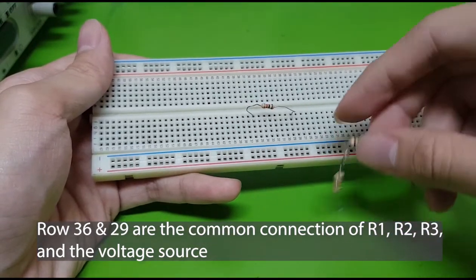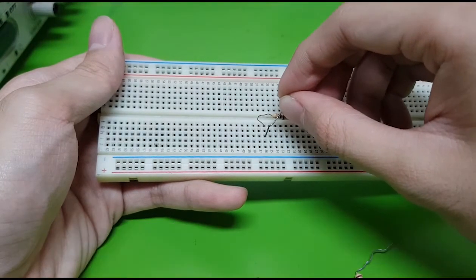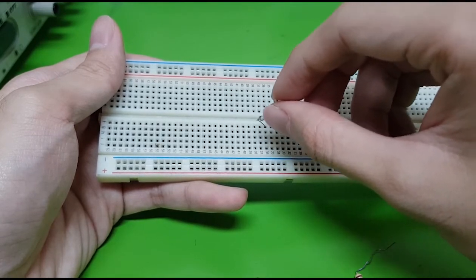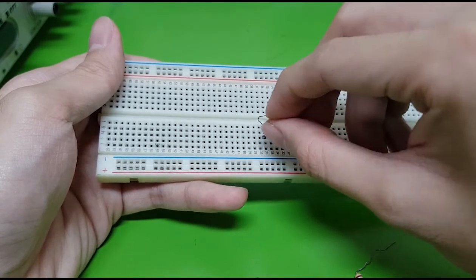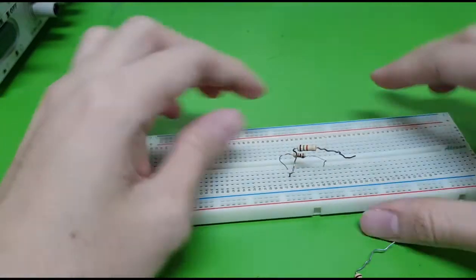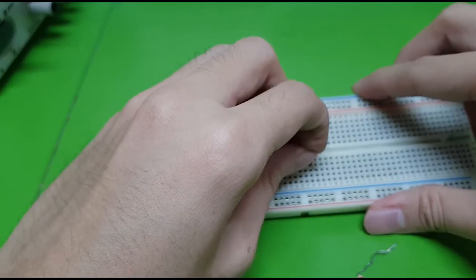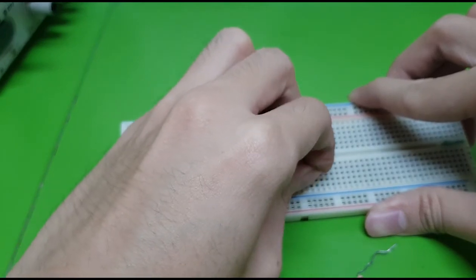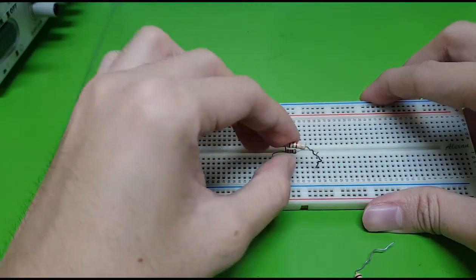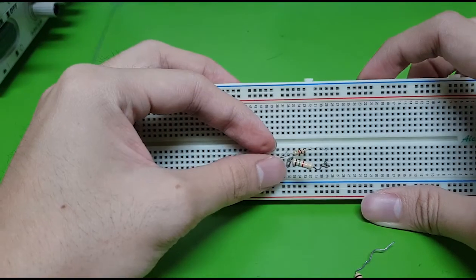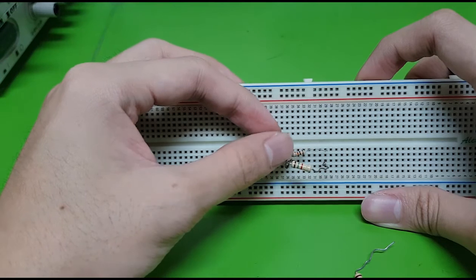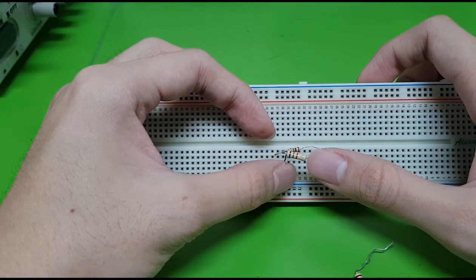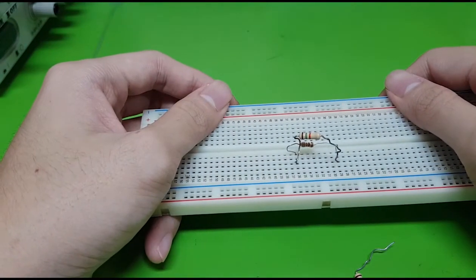I'm going to connect one resistor again with a value of 1.5 kilo-ohm here. At the same row as the left side of my 1 kilo-ohm resistor. So I'll push this one here. Then I'm going to place the other end here at the same row of the right side of my first resistor. I can say now that my first resistor, 1 kilo-ohm, is parallel with this second resistor, which has a value of 1.5 kilo-ohm.